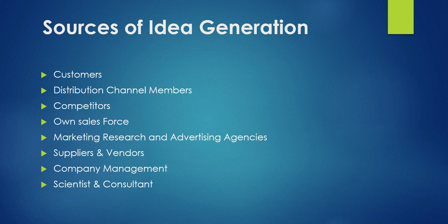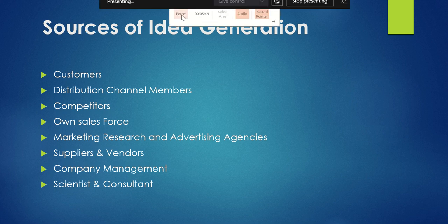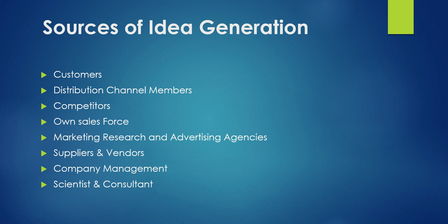The second source of idea generation is distribution channel members. As a producer, you may not be in direct contact with customers, so you need to be in touch with retailers and distributors who are in direct contact with them. They can tell you whether customers are happy with the product or not. Have regular meetings with your retailers and distribution channel members to understand how you want your product to grow.